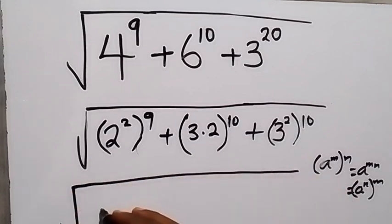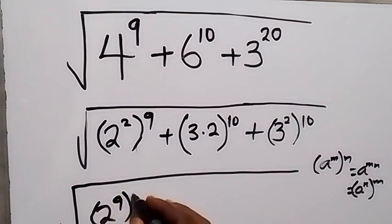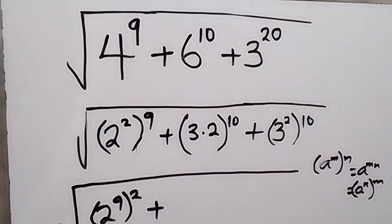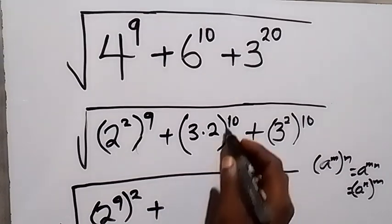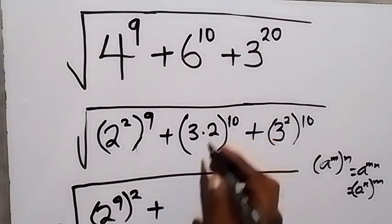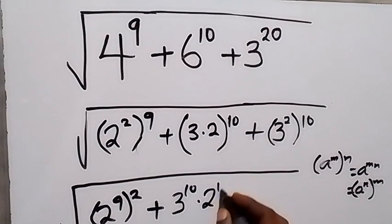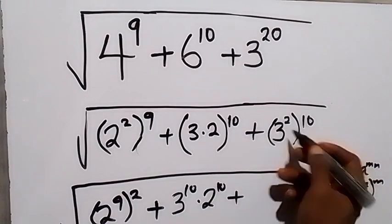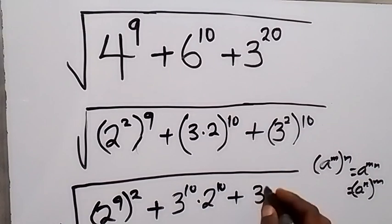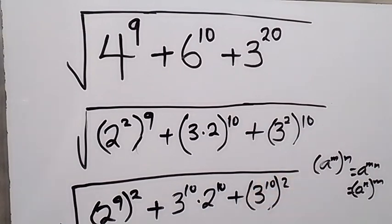2 raise to power 9, then raise to power 2. Plus, opening the bracket, we have 3 raise to power 10 times 2 raise to power 10. Then plus, we also switch this power, giving 3 raise to power 10, then raise to power 2.